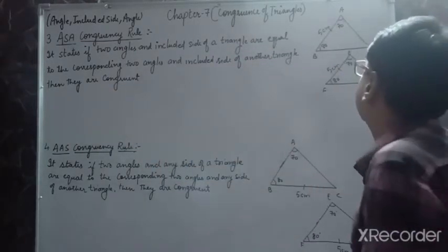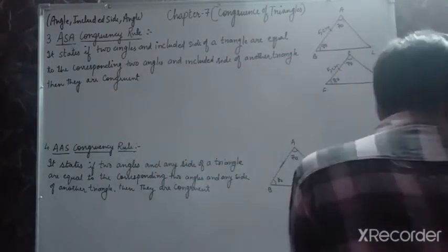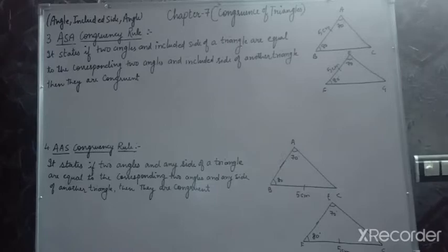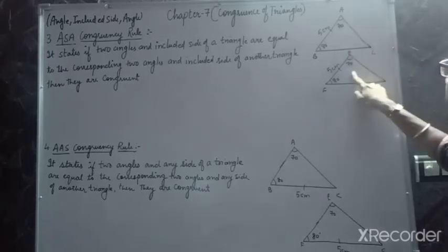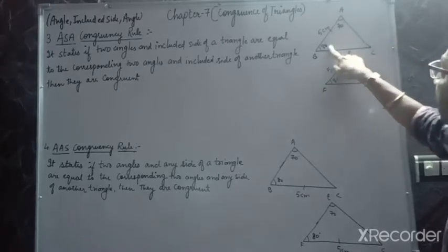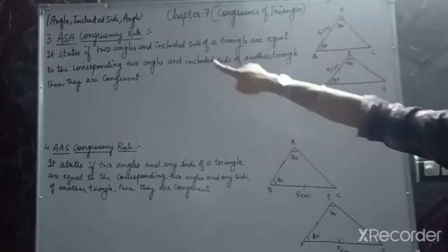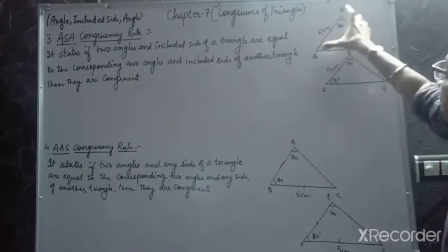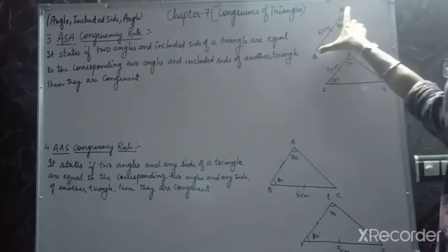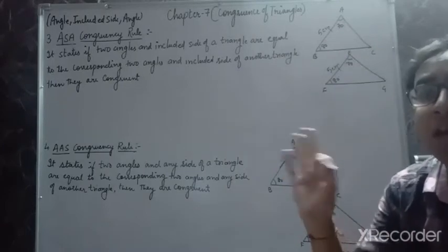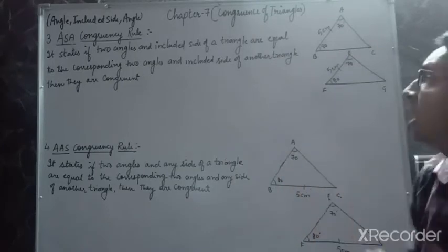Please observe these figures very carefully. You will see that there are two angles: 70°, 70°, 80°, 80°, and a side of 5 cm, 5 cm. Two angles and an included side — since this side is coming between two angles, it is called the included side.